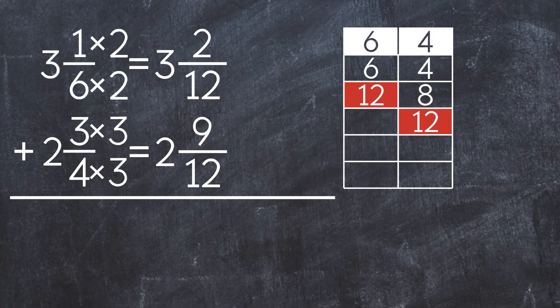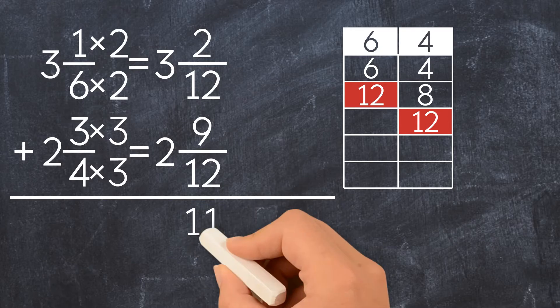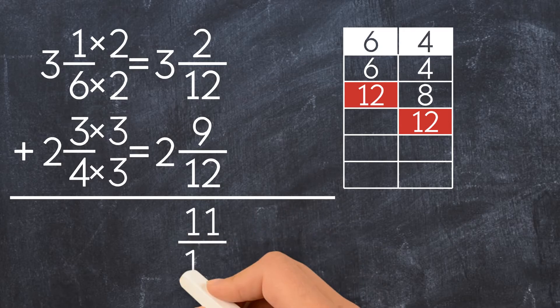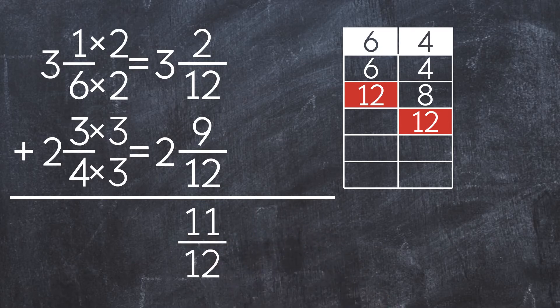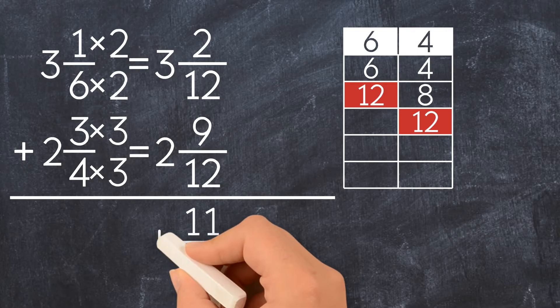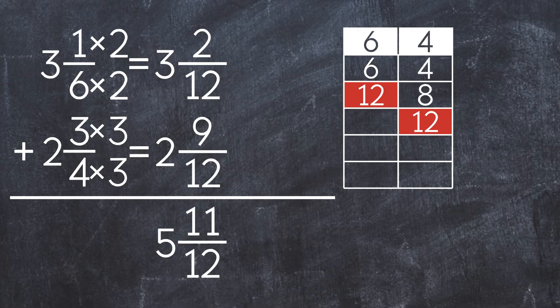Now we can add. First, we add the fractions: 2 over 12 plus 9 over 12 equals 11 over 12. Then we add the whole numbers: 3 plus 2 equals 5. So the final answer is 5 and 11 twelfths.